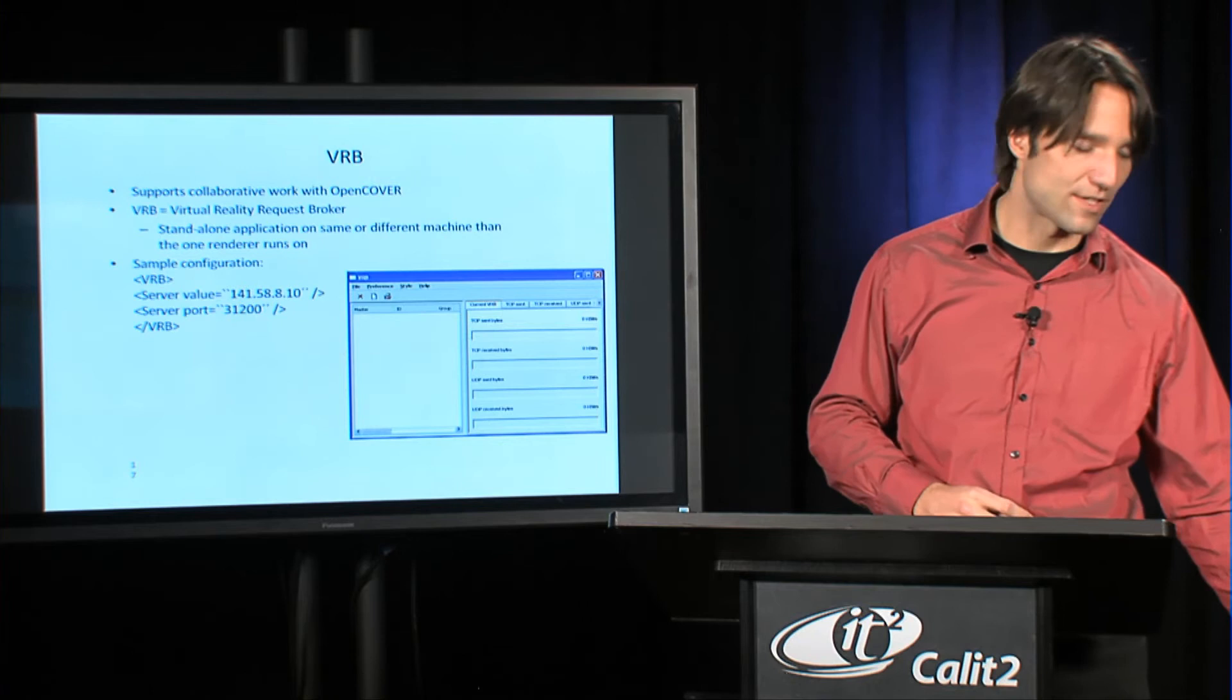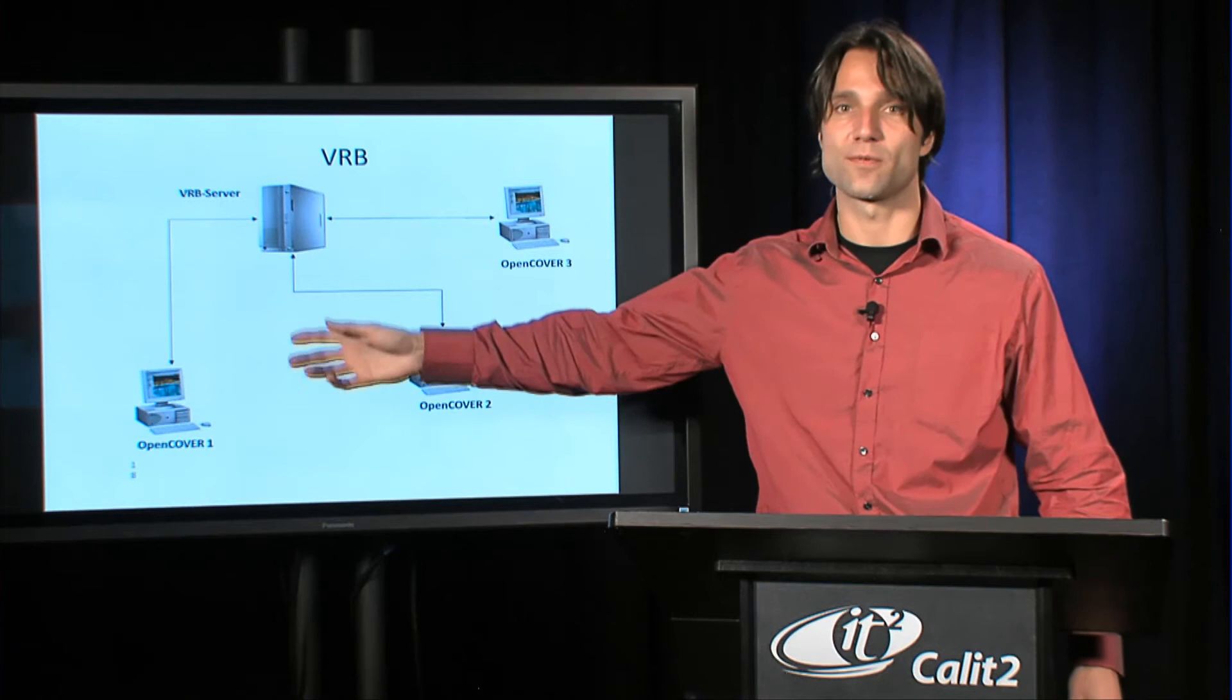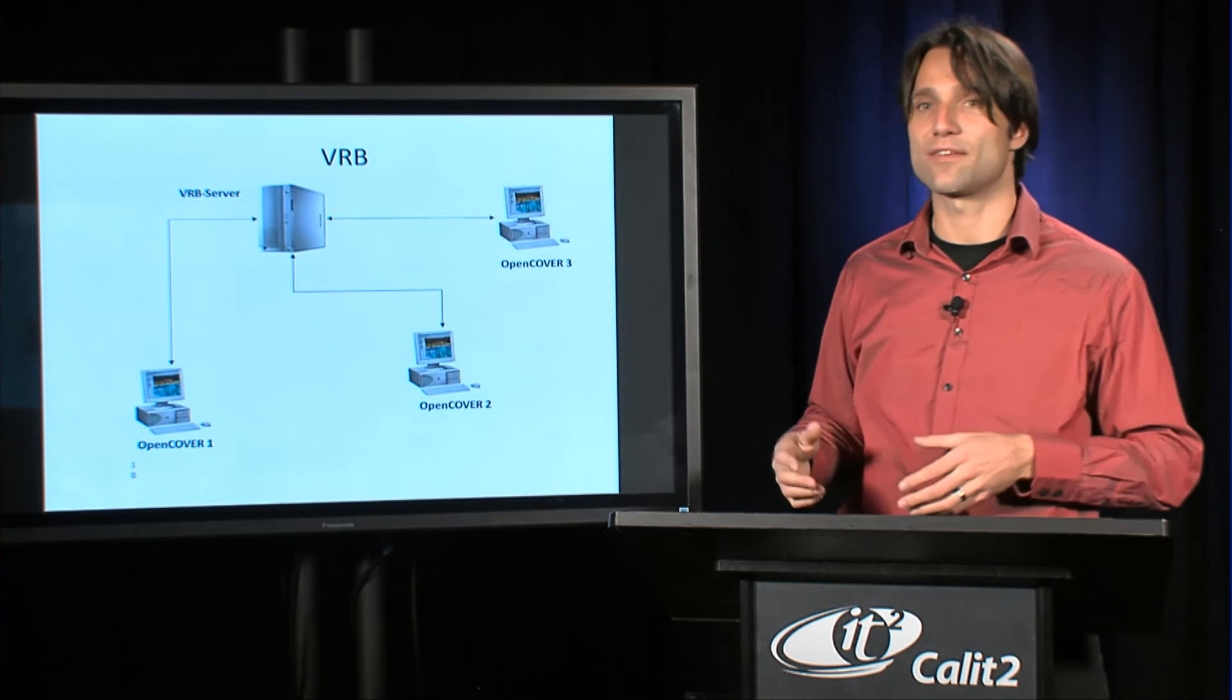This is a diagram of what that would look like. There's a VRB server which can actually be the same machine as one of the collaborating sites, but it doesn't have to. And then there are the participating sites that connect to the VRB.